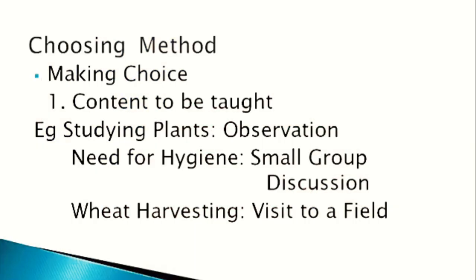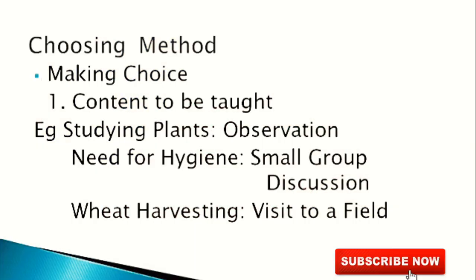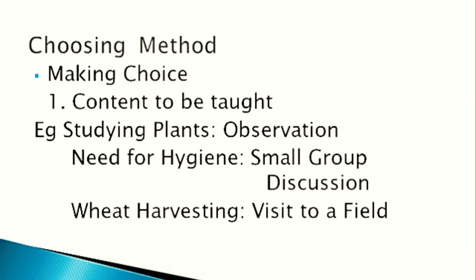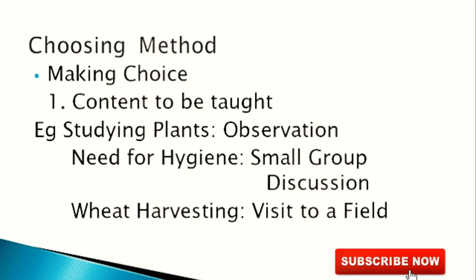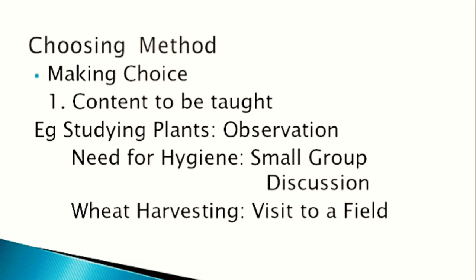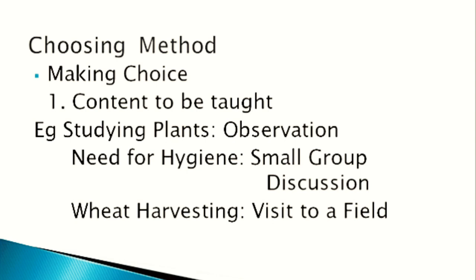It is the content which tells us what method to use. For example, if I want to study plants or insects in our school garden, observation is a very good method — we take children to the garden and observe carefully. If I want to know about hygiene, a small group discussion is appropriate. If children want to know how wheat reaches us, a visit to a wheat field is a very good method. So the content determines the choice of method.